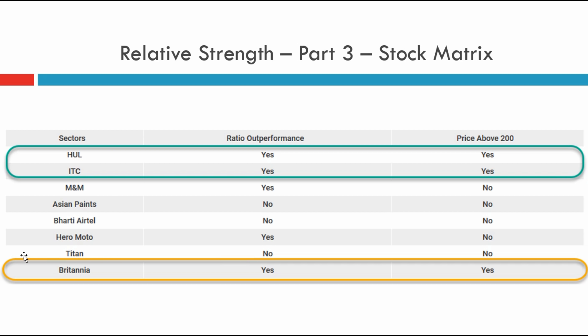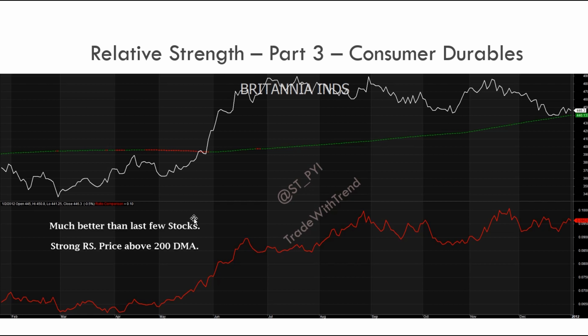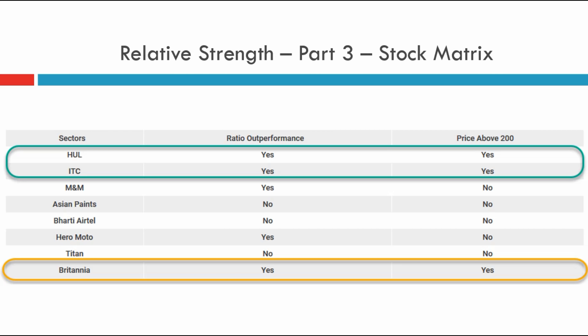Looking at the stock matrix, I've marked two columns: ratio outperformance and price above 200-day moving average. I pay a lot of emphasis on the 200-day moving average because historically most bullish trends happen above this average and most bearish trends happen below it — though 200 is just a preference; you could use 190, 210, or 220. HUL and ITC both show the ratio outperforming the benchmark and price decisively above the 200-day moving average. Britannia is marked in orange — better than most consumer durable stocks we saw, but still not at par with HUL and ITC.